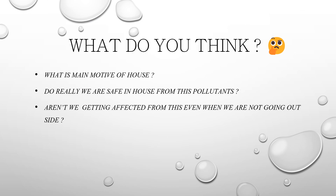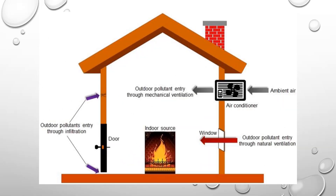Here are a few questions to make you think. What is the main purpose of a house? Isn't it to protect ourselves from the outer environment which is not good for our body? Are we really safe from these pollutants inside the house? The answer is no. We are not safe from air pollutants even when we are at home and not going outside. These air pollutants can enter our home from various ways — through ventilation, windows, air conditioners — and since pollutants are available in the air, they can reach us from various ways and affect our health badly.